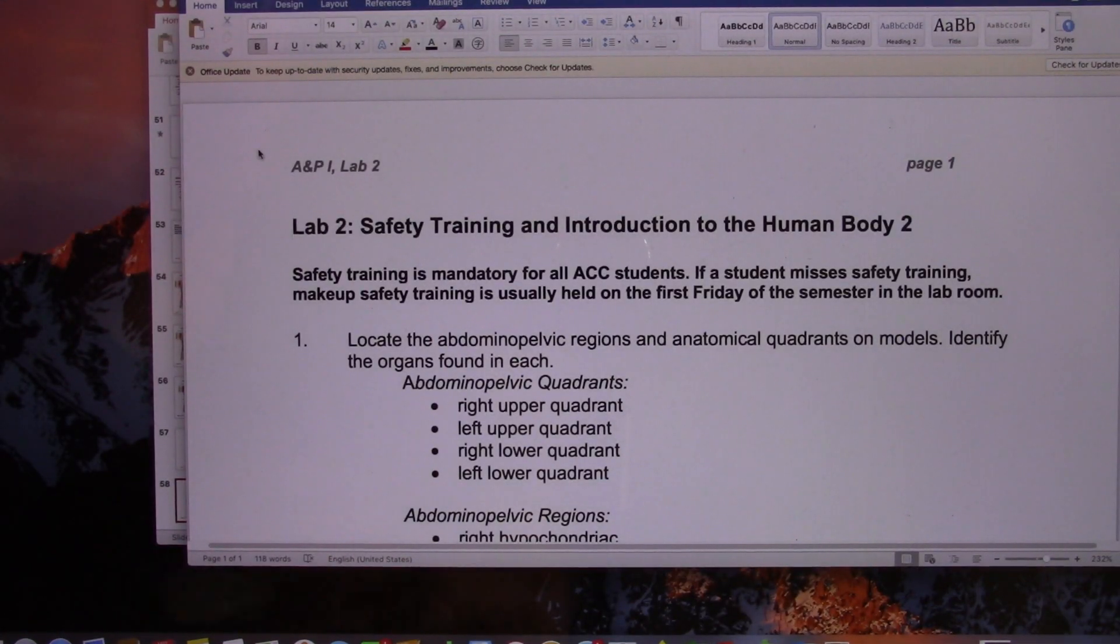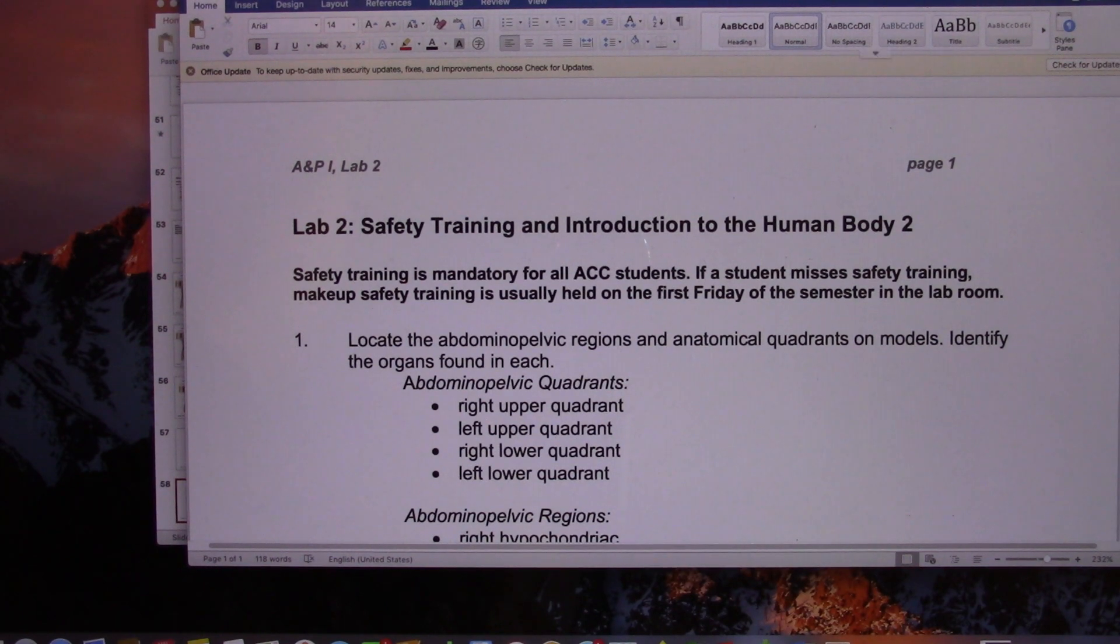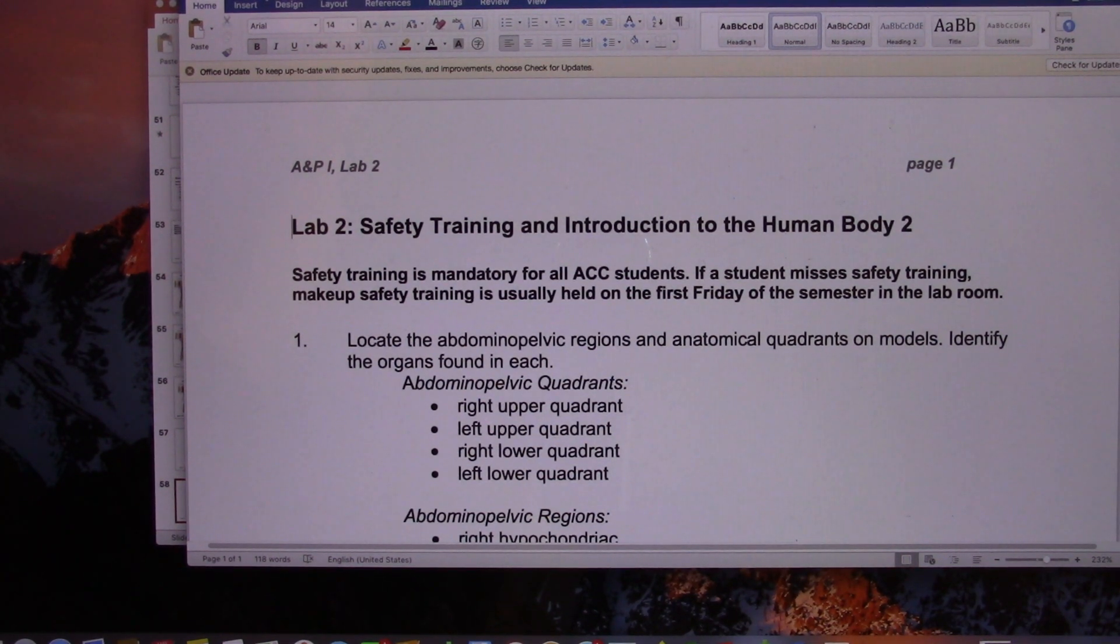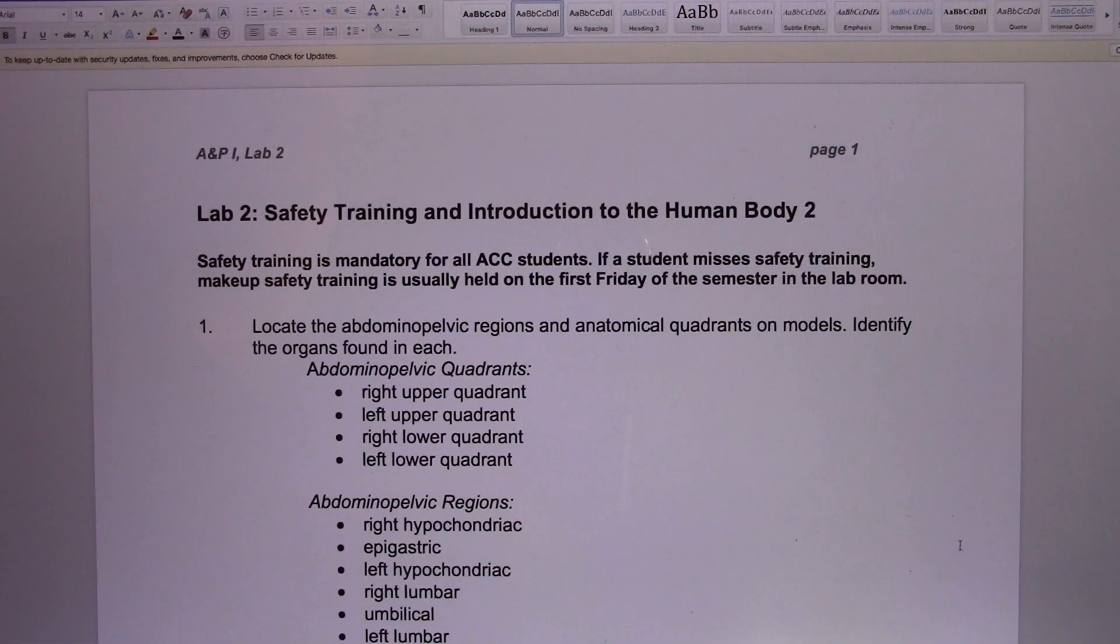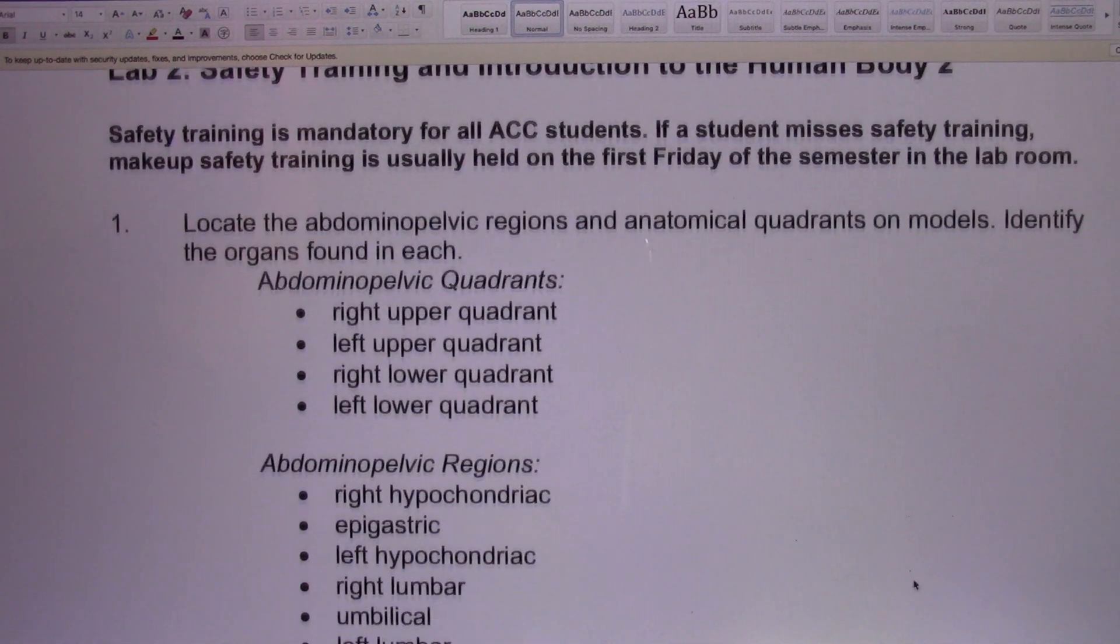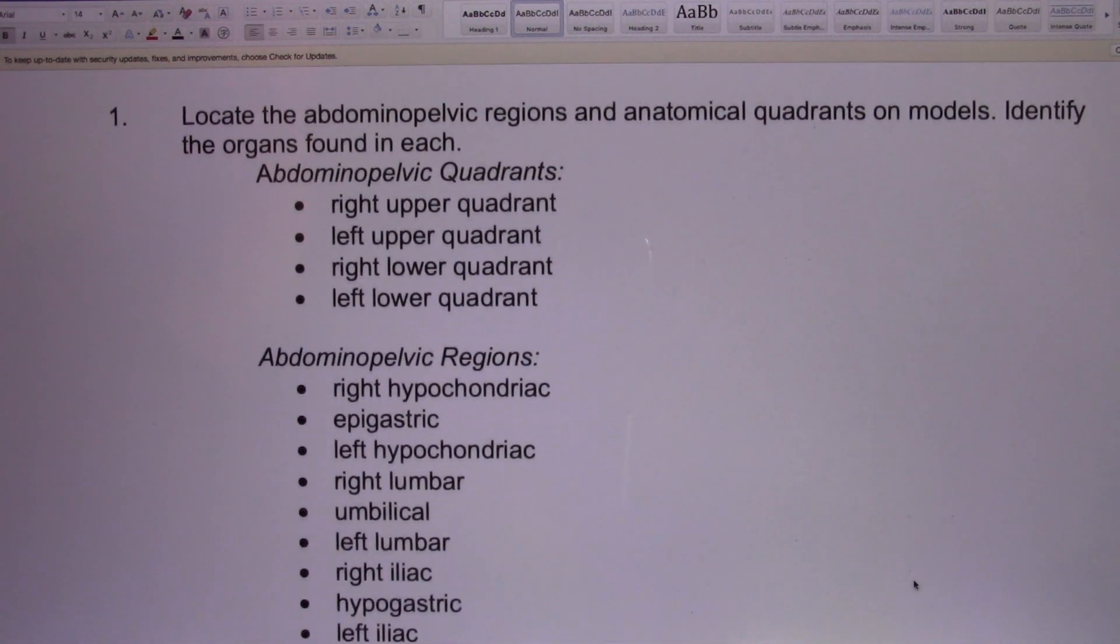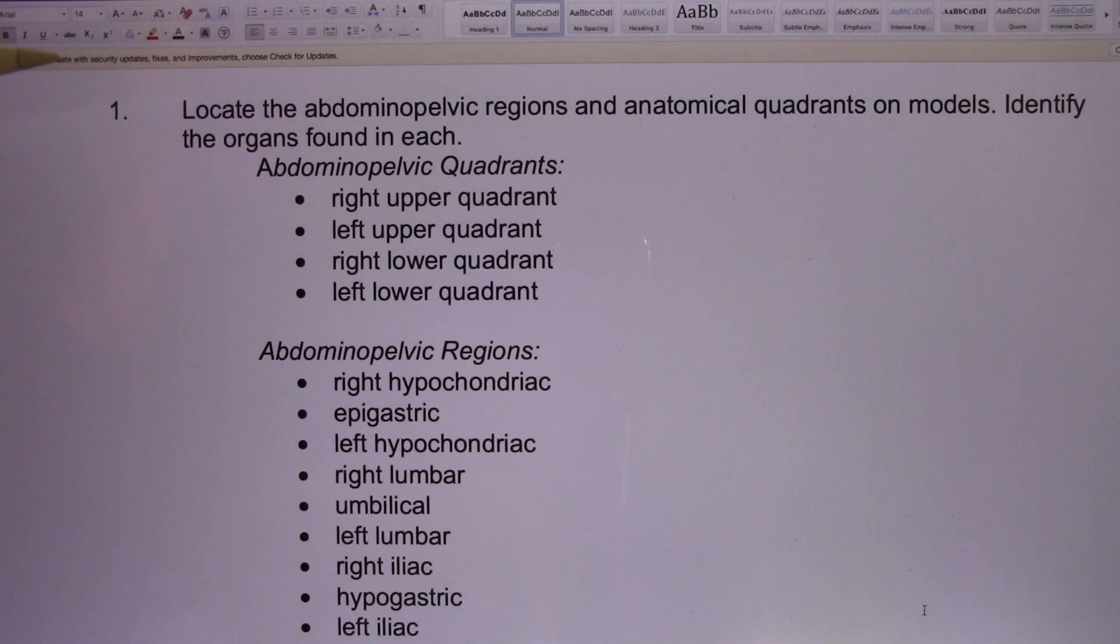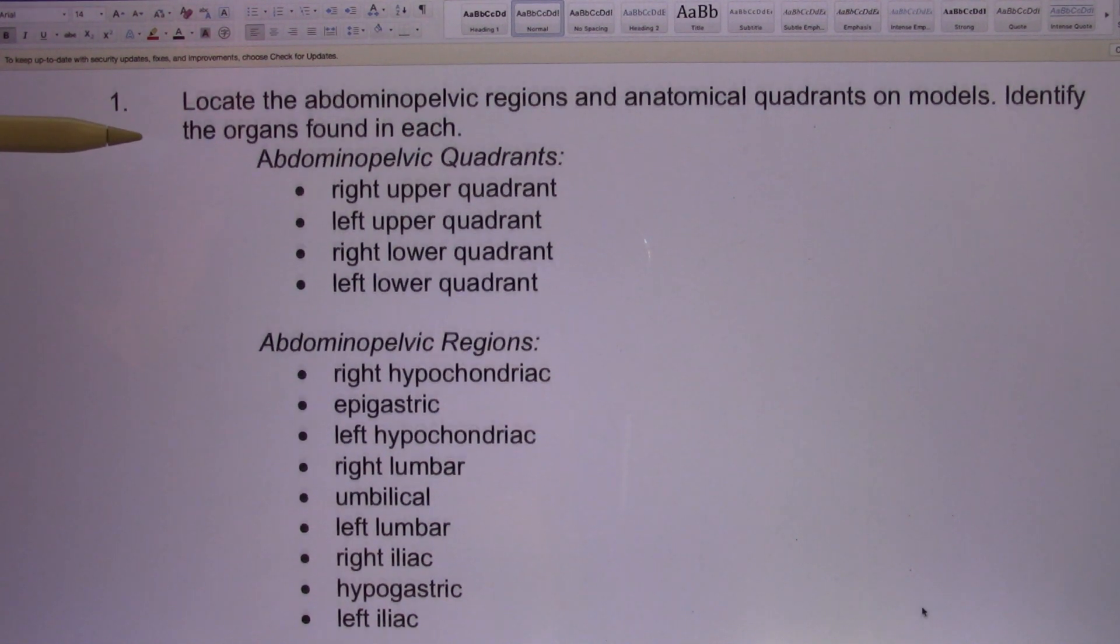Let's look at lab two. In lab two, you study those terminologies. We talk about four different quadrants. I'm going to point to one, and in the lab practical, you need to be able to spell it correctly. I'm going to point in that area, and you tell me what quadrant it is.